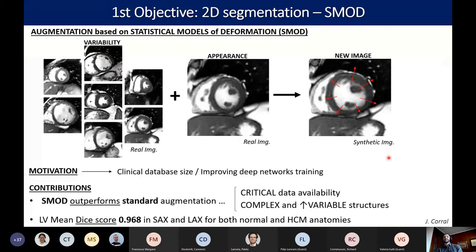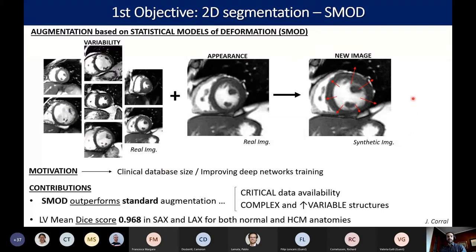In order to obtain the shape of the heart, we first need to segment the 2D CMR images. While state-of-the-art techniques based on deep learning have taken over in the medical imaging field, cardiac segmentation remains challenging because of the limited availability of training data and the enormous anatomical variability. To overcome this, we developed SMOT, which lends the variability of the population to produce anatomically meaningful deformations to augment the dataset. It was proven to outperform standard augmentation, especially in scenarios where the available data was very limited or the structures to be segmented are highly complex and variable, like in hypertrophic cardiomyopathy.